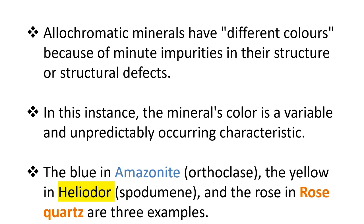Allochromatic minerals have different colors because of minute impurities in their structure or due to structural defects. In this instance, the mineral's color is variable and unpredictable. Examples include the blue in amazonite (an orthoclase feldspar variety), the yellow in heliodor, spodumene (a lithium mica), and rose in rose quartz — all examples of allochromatic minerals.